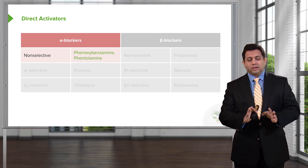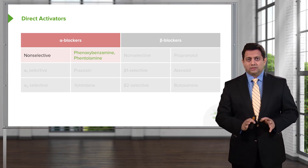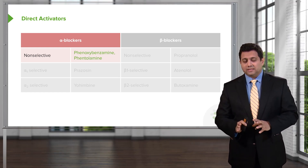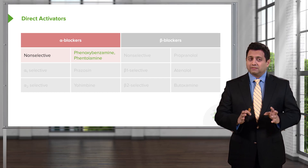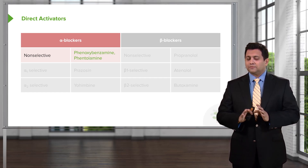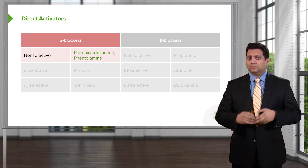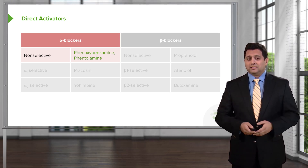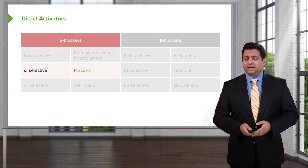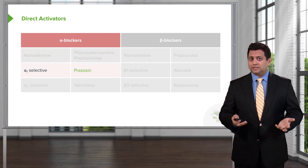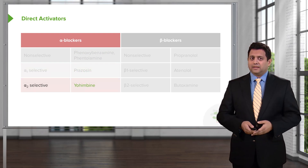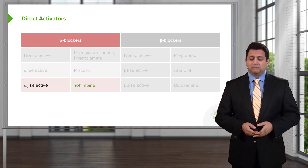I want you to remember these drugs. I'm only going to pick the ones that you're going to be tested on — there are literally hundreds within each class, so let's just focus on the important ones. The alpha-1 selective agent of choice is prazosin, and the alpha-2 selective agent is yohimbine.